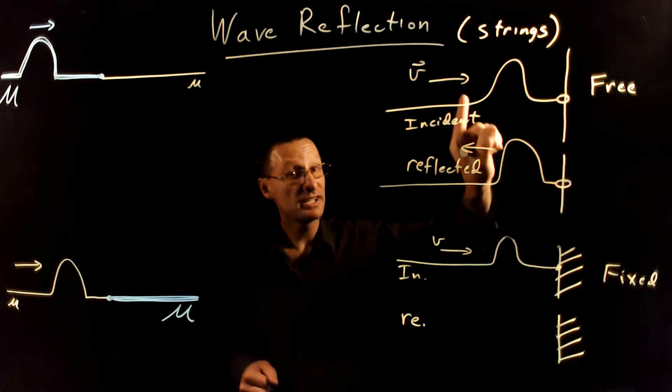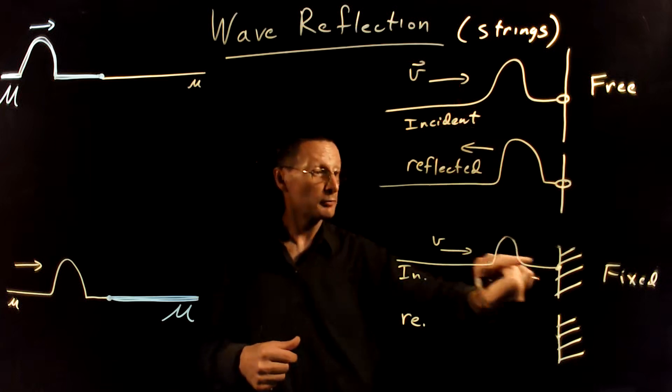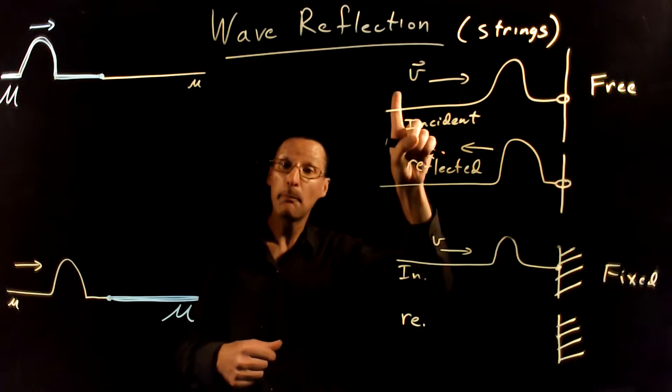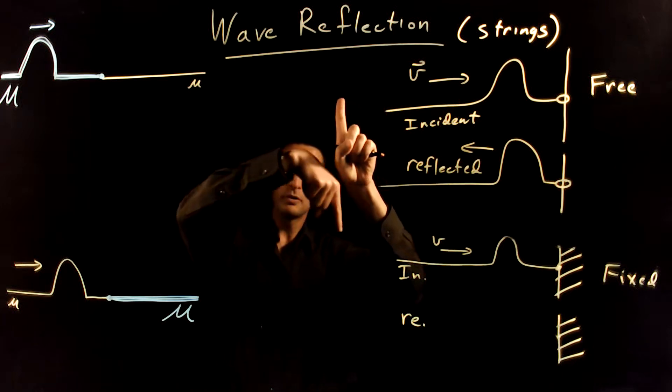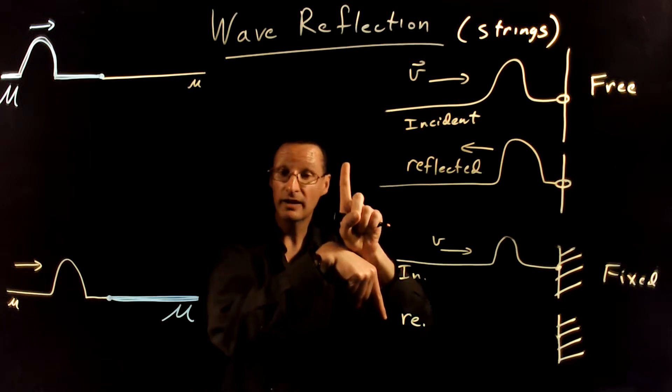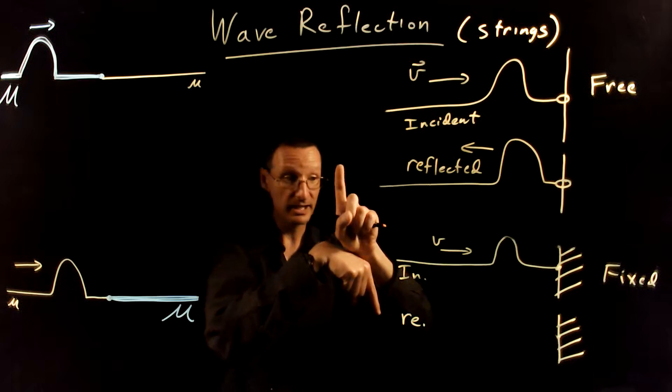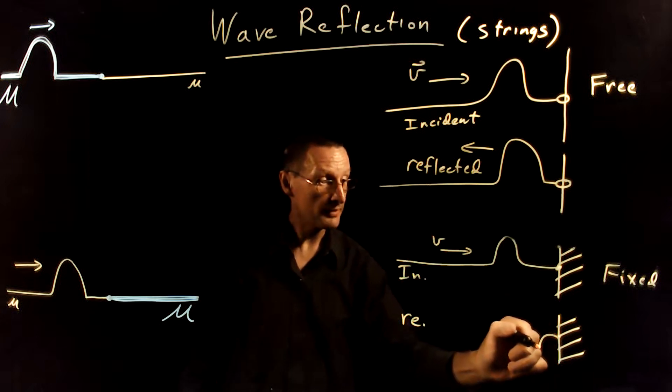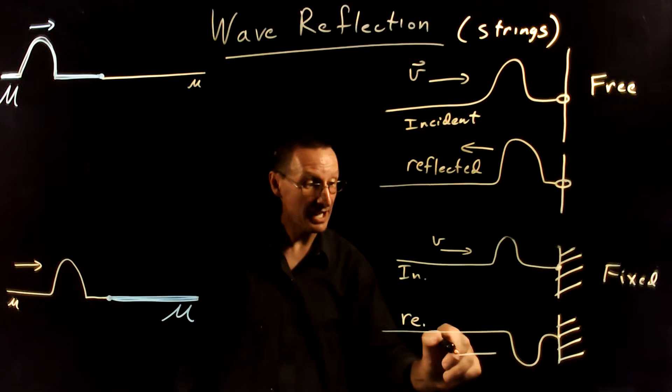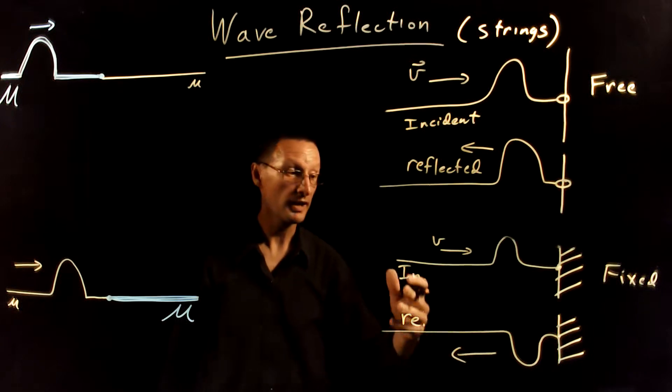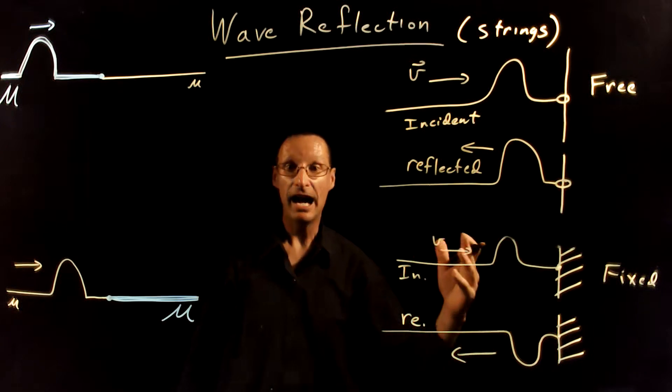What happens when the incident wave comes in here is that the string is stretched upwards like this. When it reaches the wall, the string pulls up on the wall, the wall then pulls back down with an equal and opposite force on the string, and the reflected wave then will be upside down compared to the original, or the phrase we use for this is out of phase.